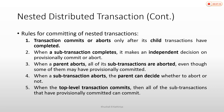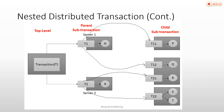Rule two: when a sub-transaction completes, it makes an independent decision to provisionally commit or abort. The sub-transaction may be complete, but if it is in an abort state, we will wait before finalizing. The sub-transaction replies to the parent transaction — this decision is made independently by the sub-transaction.